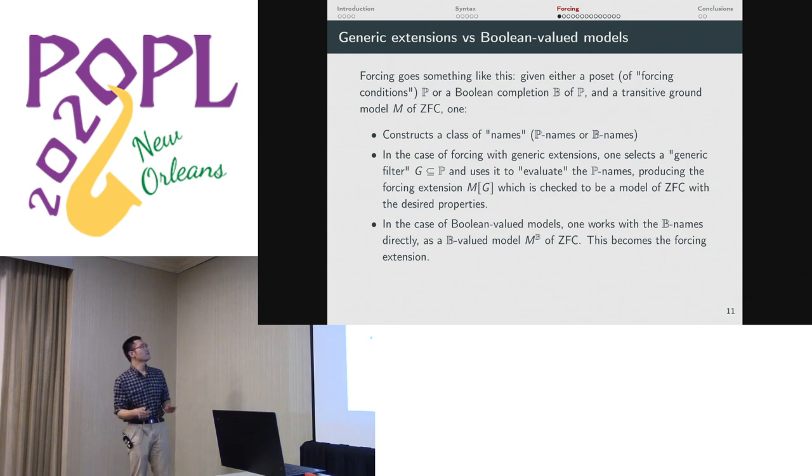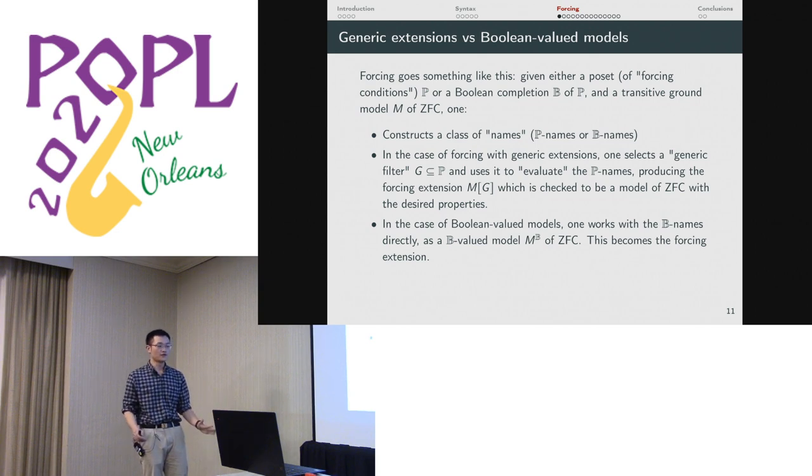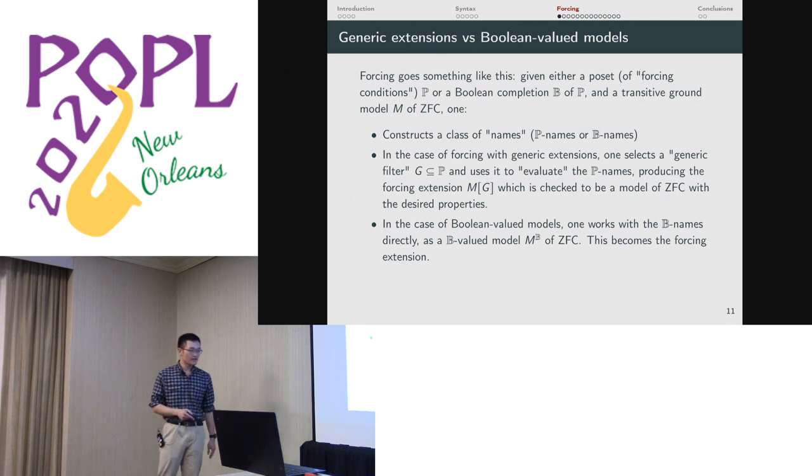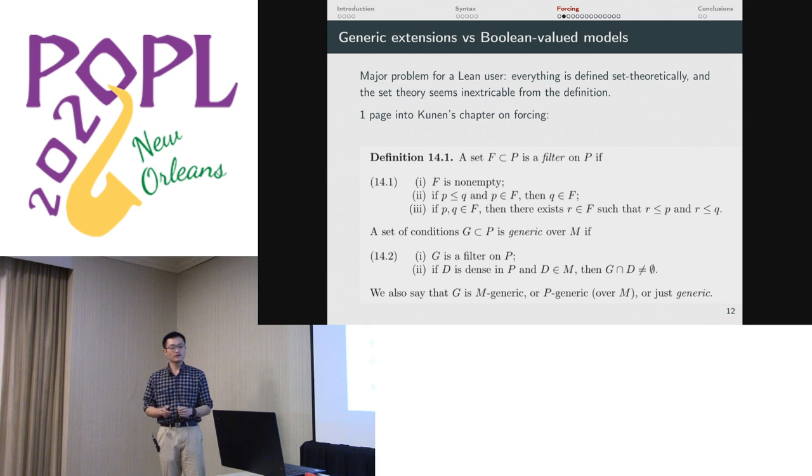Time for forcing. Typically, forcing arguments follow this shape. You have a poset P, or a Boolean algebra that completes P. You typically start with a ground model of set theory. First, you have to construct a class or set of names, P names or B names. If you're forcing with filters, you select some kind of filter G inside P. This evaluates the P names, which produces a forced extension that you later have to check as a model of ZFC and that you have forced something to be true inside the model. In the case of Boolean-valued models, you don't evaluate the names at all. Instead, you take the B names and you just try to treat them as a model of ZFC. The price you pay for this is that you have to move away from two-valued logic and work in a logic where the truth values take place in B instead. So those are the two paths available to us.